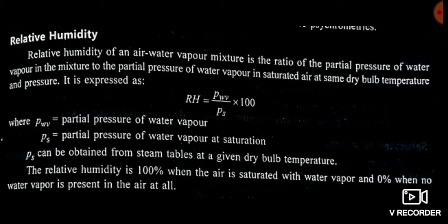Relative humidity is 100% when the air is fully saturated, and 0% when there is no water vapor present in the atmosphere. When the atmosphere is fully saturated, the partial pressure of water vapor in the mixture equals the partial pressure at saturation, so they cancel out and relative humidity becomes 100%. When the atmosphere is fully dry, there is no water vapor and no partial pressure, so relative humidity is zero.